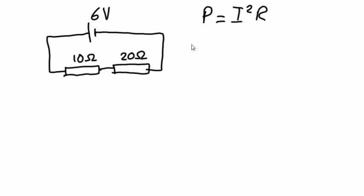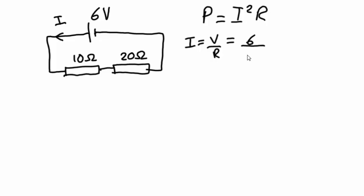In a real circuit you could measure the current flowing through the circuit. However, in this circuit we will just use our equation I equals V divided by R in order to calculate this current. So that would be 6 divided by the total resistance of 30, which will give us 0.2 amps.